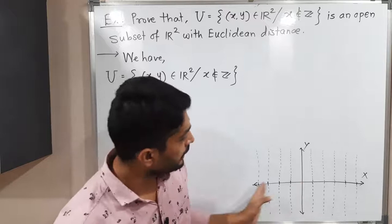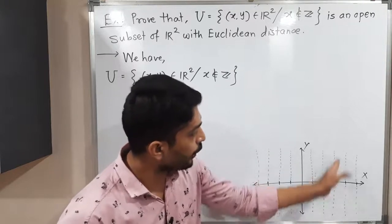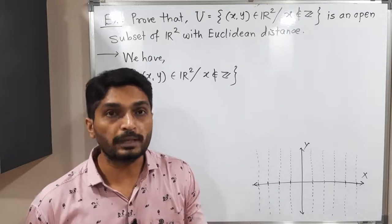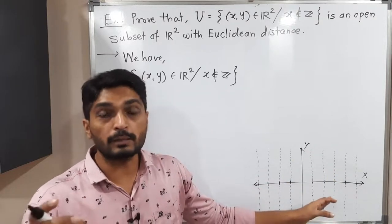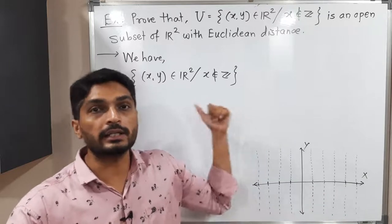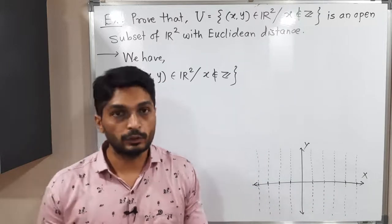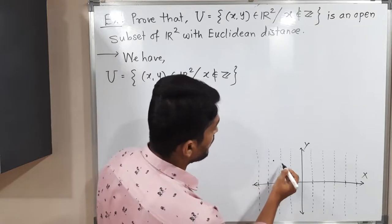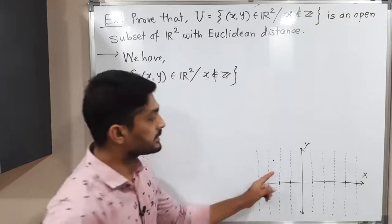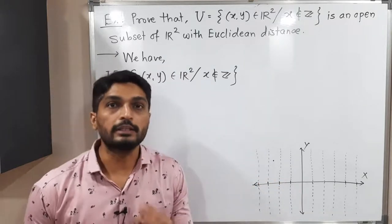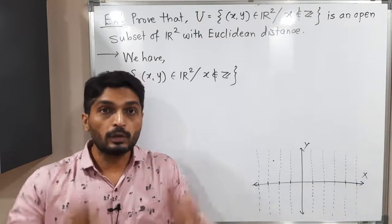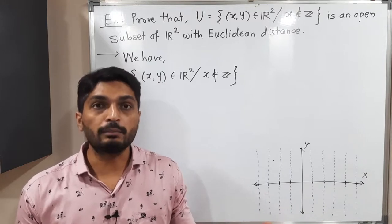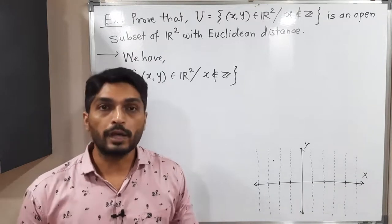I have drawn vertical lines at all the integers. Our point should not be on any of these lines — then the x-component will not be an integer and the point is an element of U. You can take any point between the lines, but if you take a point on a line its x-coordinate will be an integer. So removing all these vertical lines from the x-y plane gives us set U.